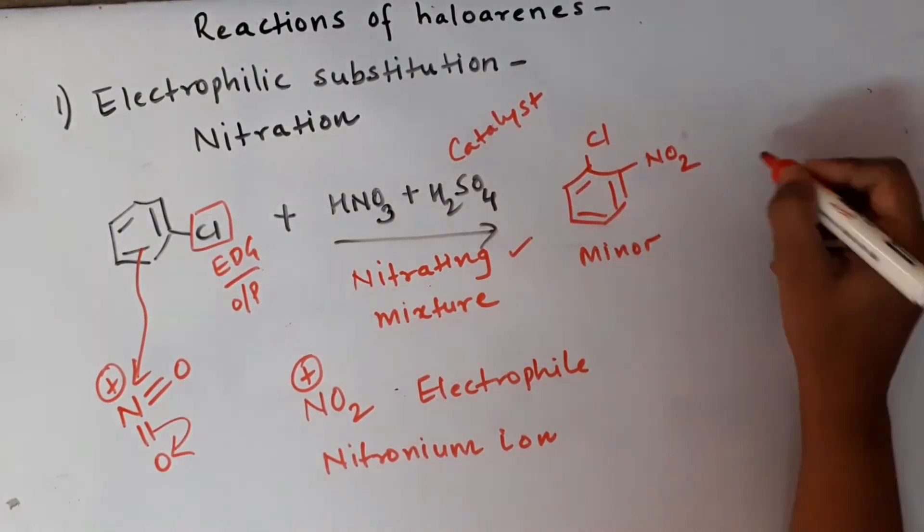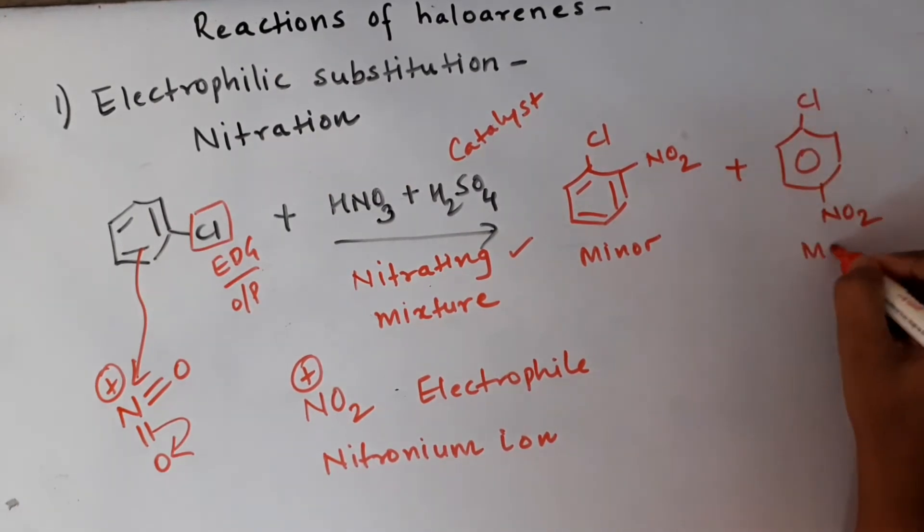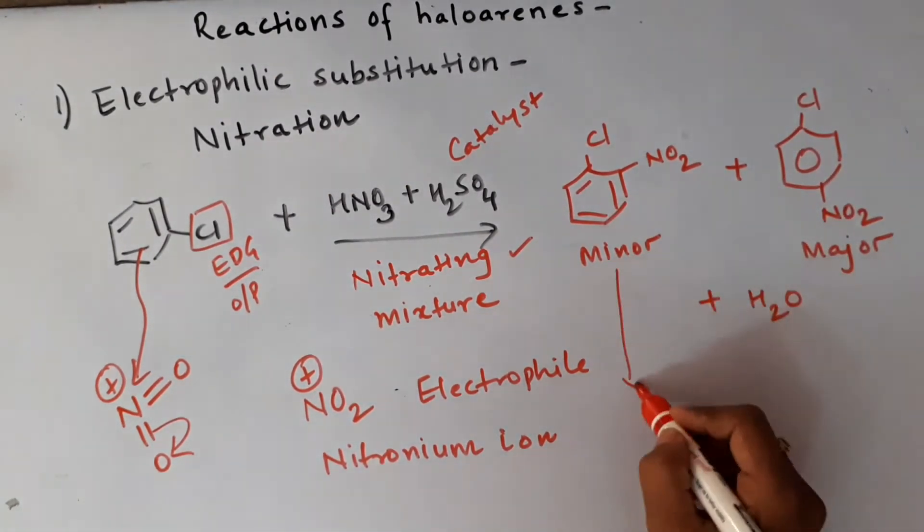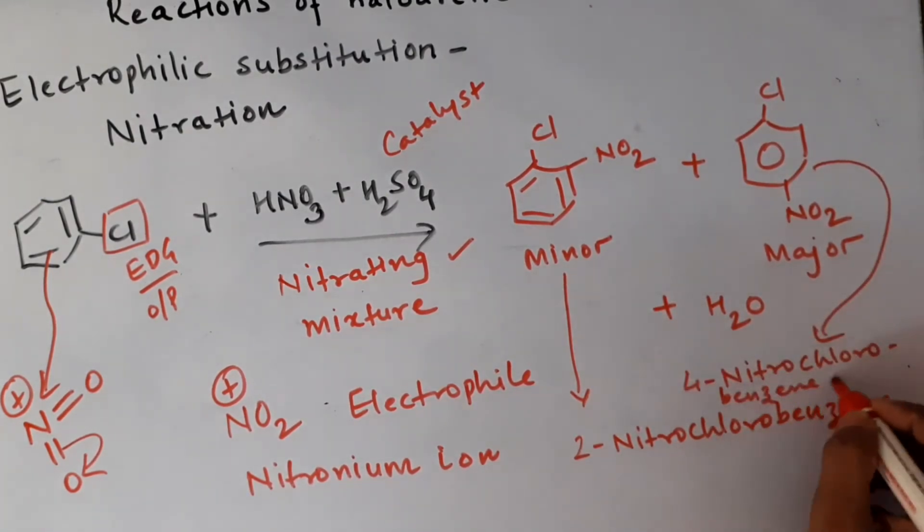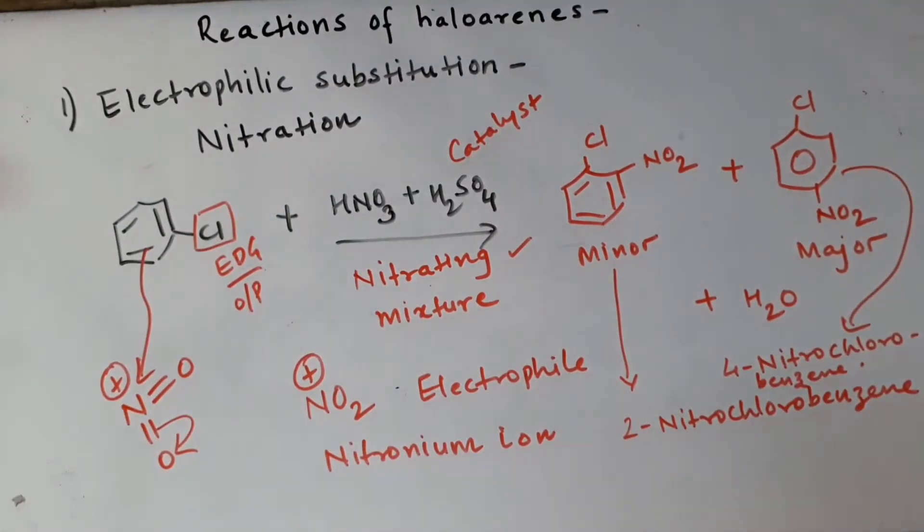The first ortho-nitro chlorobenzene is formed as a minor product, and para-nitro chlorobenzene is formed as the major product. Water is the byproduct here.